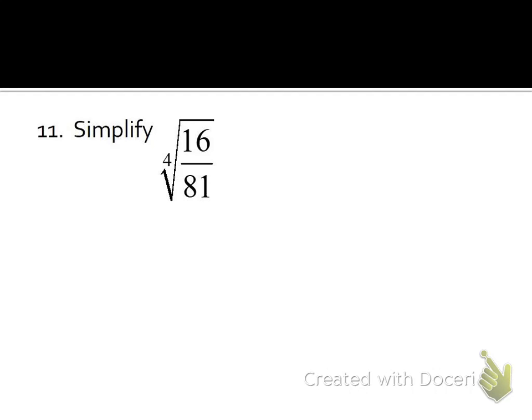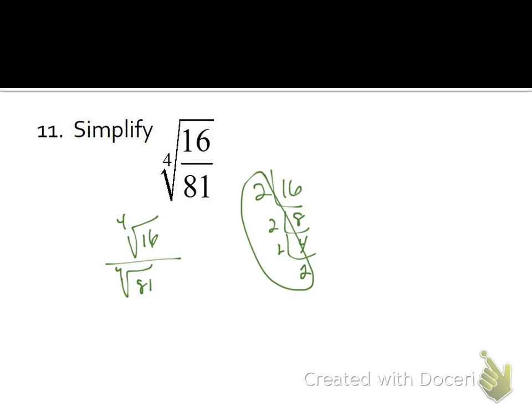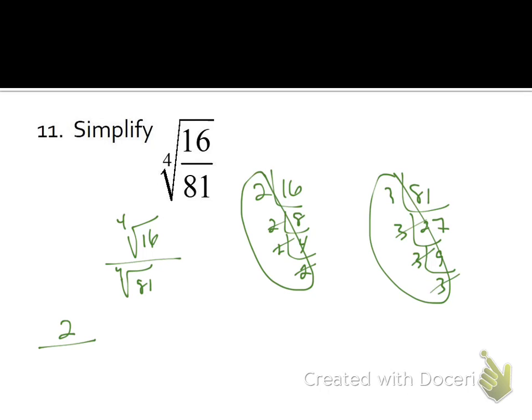Now let's look at the division property. Anytime you have a fraction inside a radical, look to reduce the fraction first. For the fourth root of 16 over 81, we can't reduce the fraction, so break it apart: fourth root of 16 over fourth root of 81. For 16: four 2s break out a 2, nothing back in — just 2. For 81: four 3s break out a 3, nothing back in. The radical goes away, and we get 2 thirds.